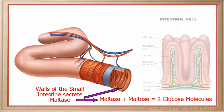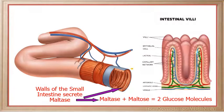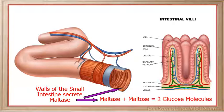The glucose molecules are now small enough to be absorbed directly into the bloodstream through the capillary network of the microvilli that line the walls of the small intestine.